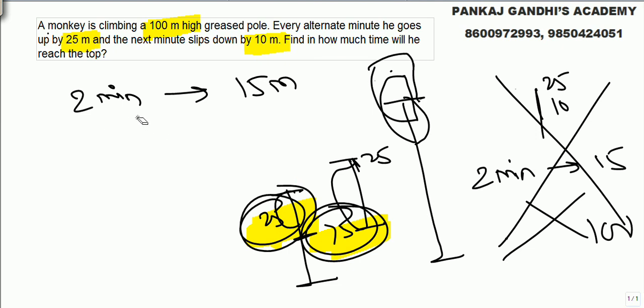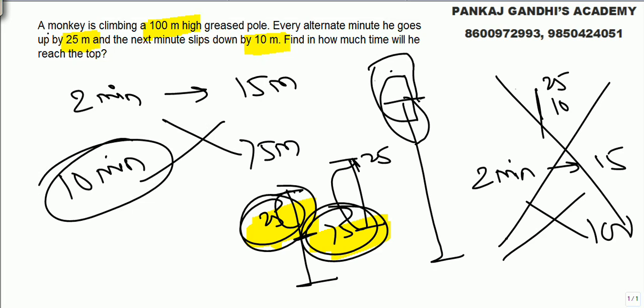In 2 minutes monkey goes up by 15 meters. To go 75 meters, monkey will need how many minutes? 10 minutes. I repeat, in 2 minutes 15 up down, up down. Let monkey reach 75. In 10 minutes monkey will reach 75 meters.